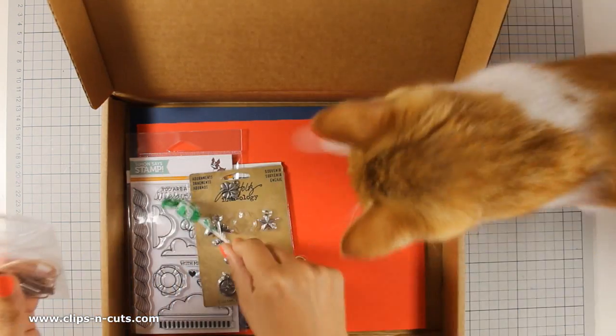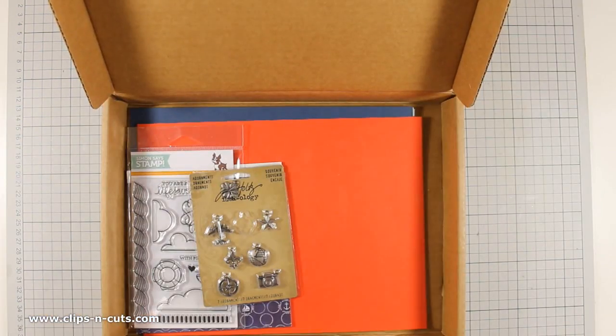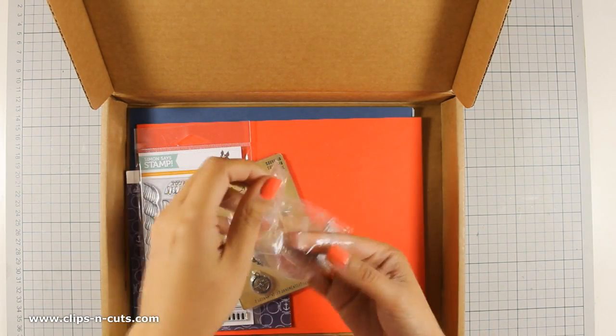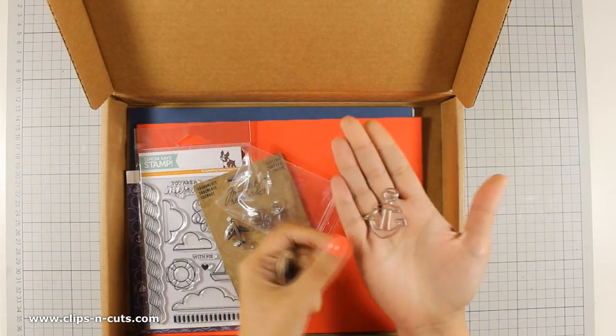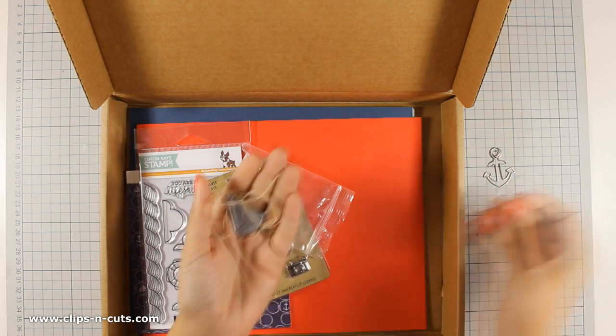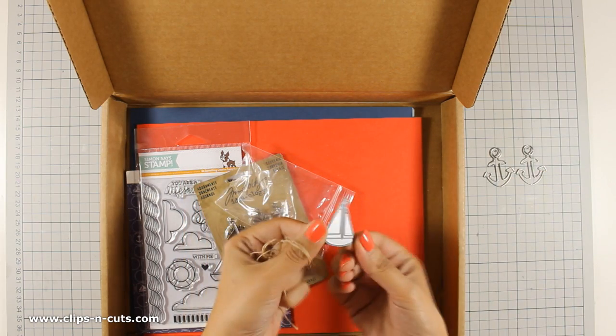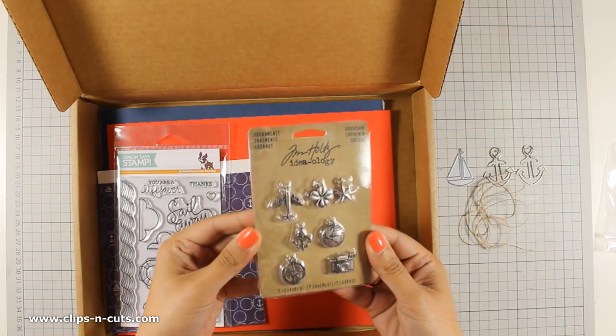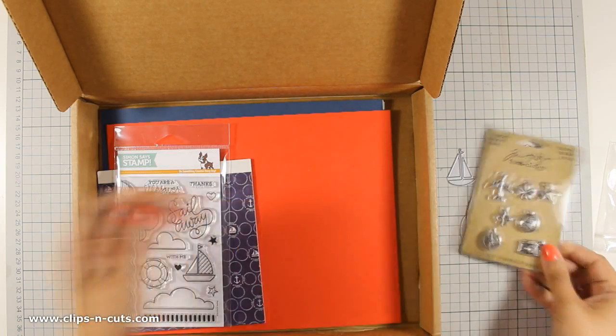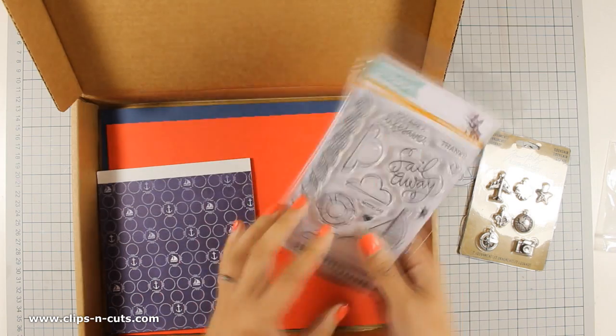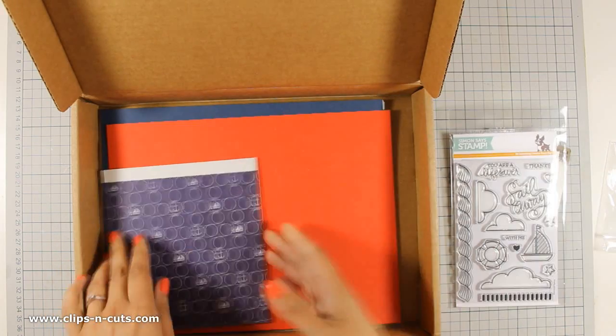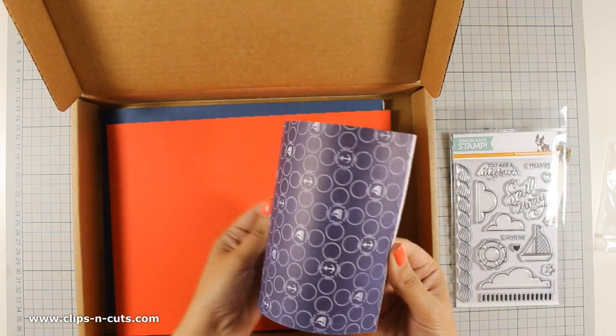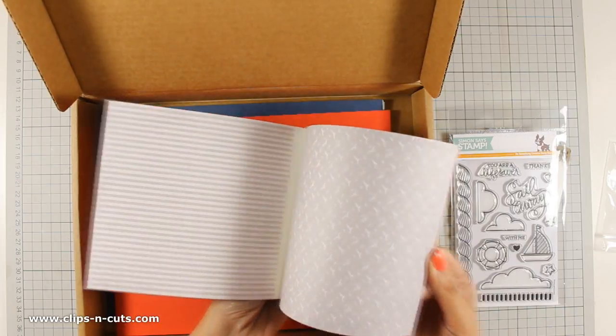First of all there is this little lollipop that my cat really loves and there are also included two metal anchors, there are paper clips actually, as well as a sailboat die and a piece of string. There are also metal accents by Tim Holtz, a lovely nautical themed stamp set and a paper pad full of coordinating nautical themed papers.